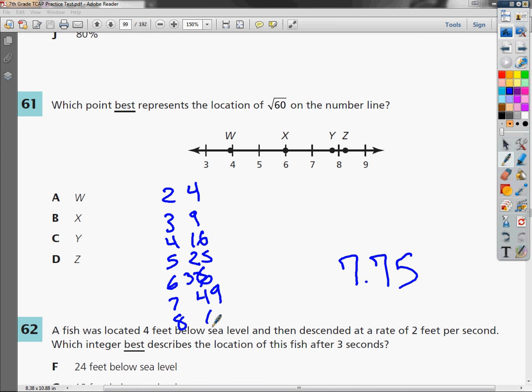8 times 8 is 64. So the square root of 60, if we're doing square roots, remember it just goes backwards, would be somewhere between 7 and 8. So what we're going to do is look for a point that's somewhere between 7 and 8, which would be, of course, y. So the answer to number 61 is c.